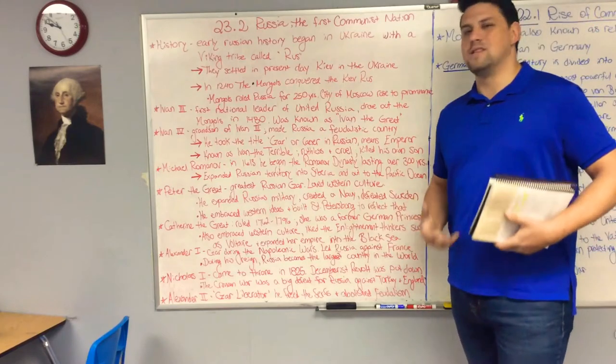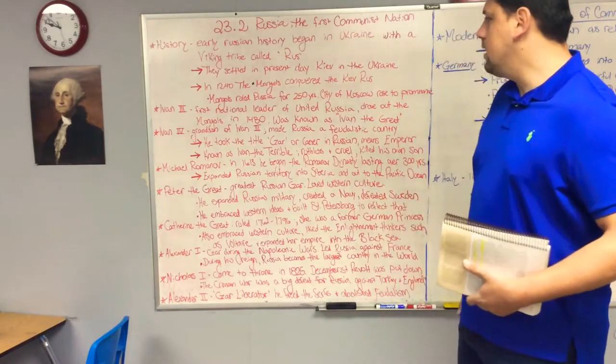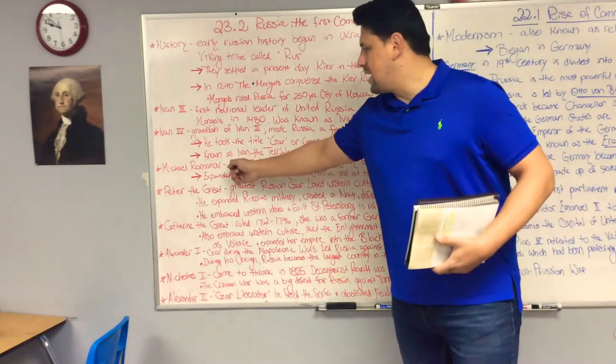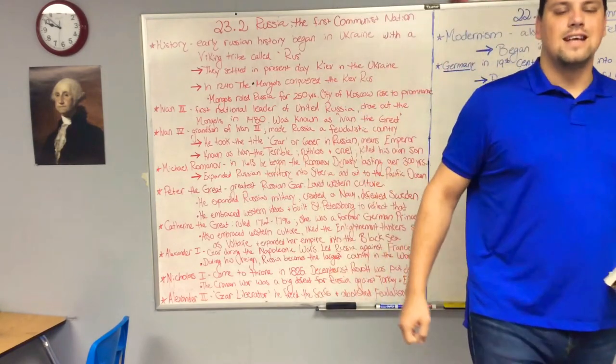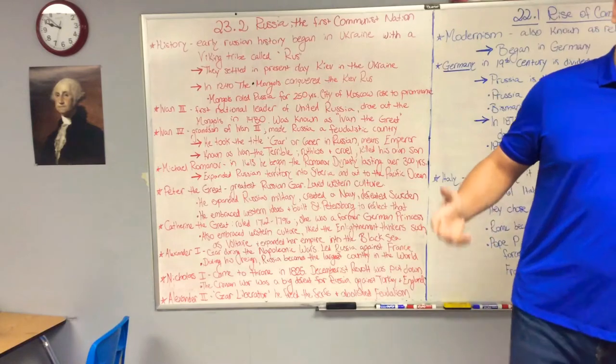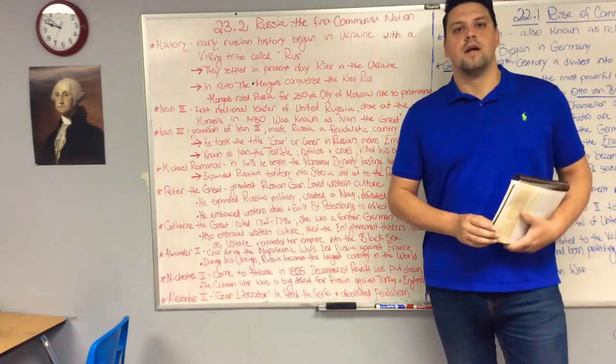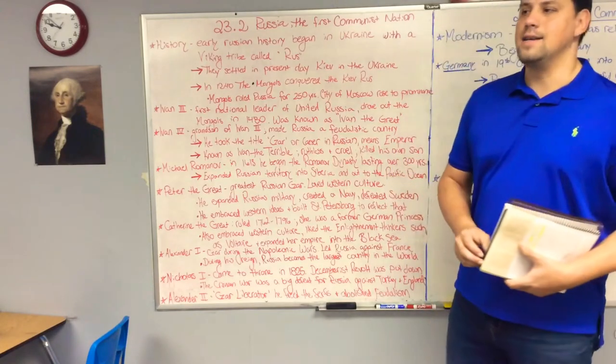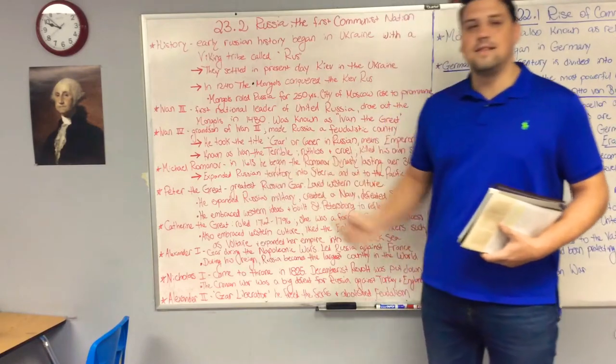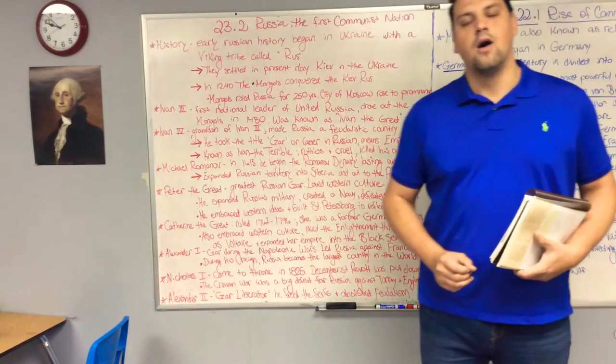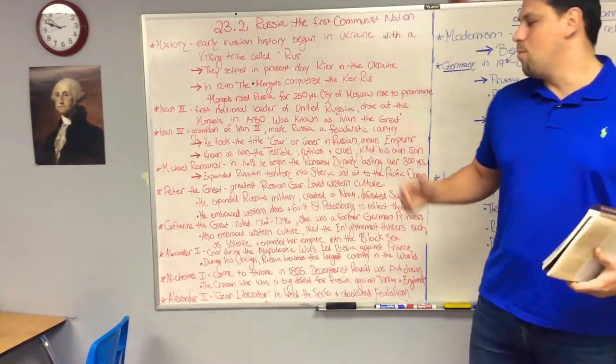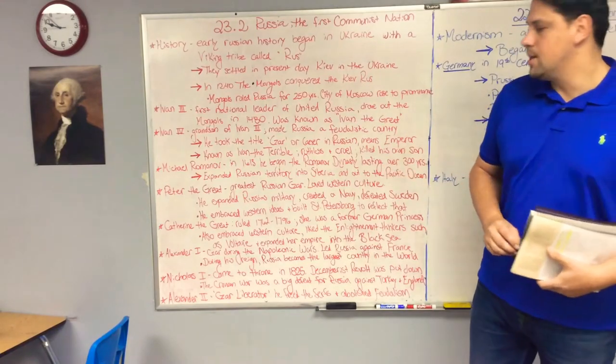Eventually a guy by the name of Mikhail Romanov will rise up to the throne and he will begin what's known as the Romanov line of kings or the Romanov dynasty, which lasts from 1613 all the way up till about 1917. That's a little bit over 300 years, and it's going to end with one of his relatives, Nicholas II, being executed.